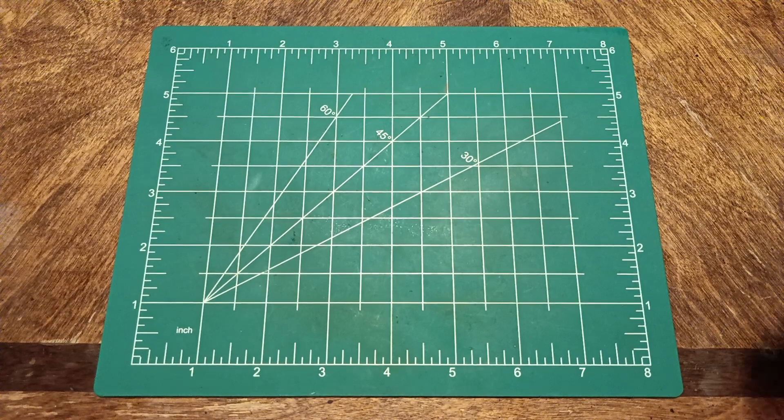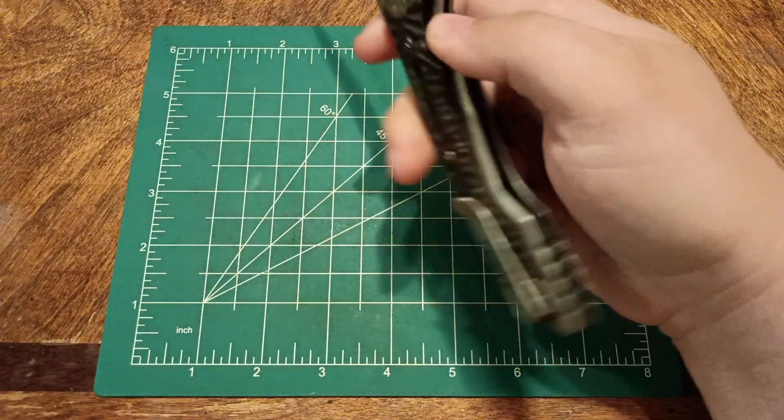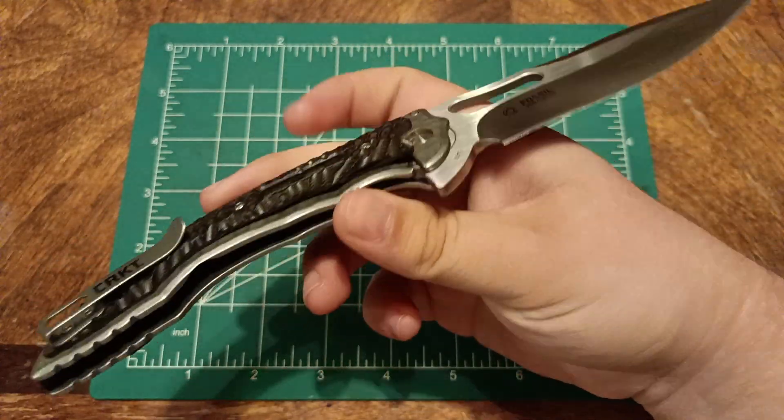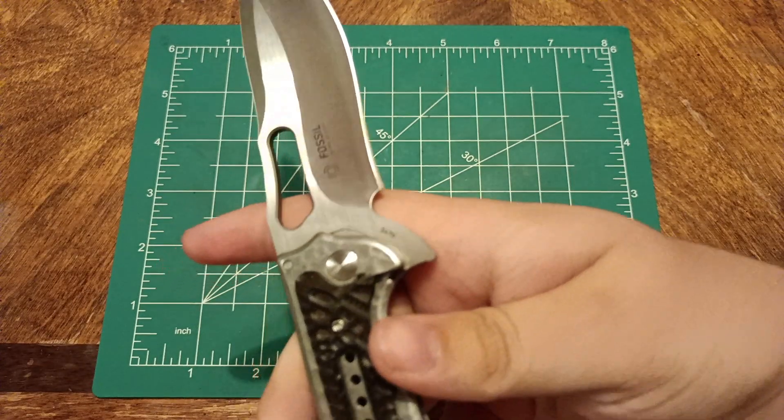Hello everybody, today we are just going to be doing a cleaning of this CRKT Fossil. This is a full-size Fossil, model number 5470.